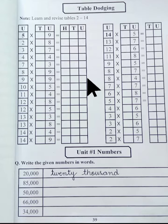Learn and revise tables 2-14 and solve table dodging on page number 39 of your summer work pack. Now I am going to discuss unit number 1 numbers.